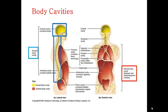The ventral body cavity has two subdivisions separated from each other by the diaphragm. These are the thoracic cavity, which lies superior to the diaphragm and contains the heart and lungs, and the abdominal pelvic cavity, which lies inferior to the diaphragm, containing the stomach, intestines, urinary bladder, liver, reproductive organs, rectum, and many other structures.